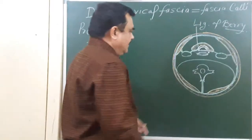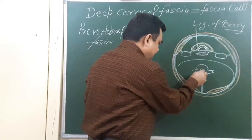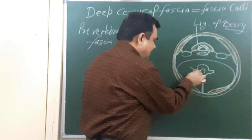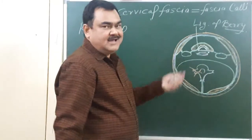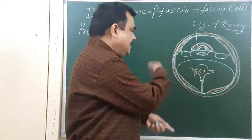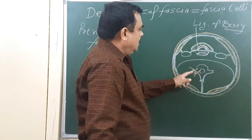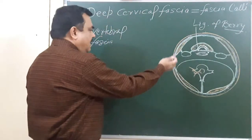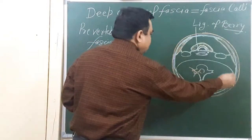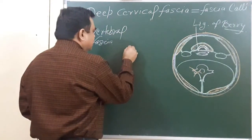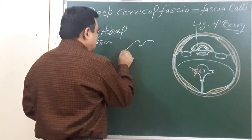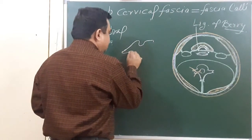Here you can see the nerves arise: this is the dorsal ramus, this is the ventral ramus. These nerves form the brachial plexus and cervical plexus, and pass here at the inferior level, covered by the axillary sheath. If you trace this fascia in the vertical position, you will find this is the base of the skull.